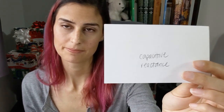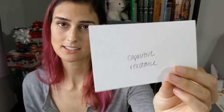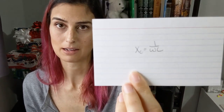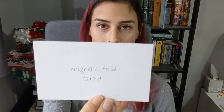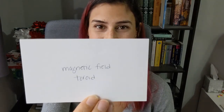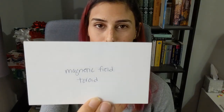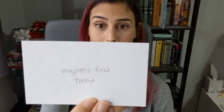Capacitive reactance: X sub C equals 1 over omega times C. The magnetic field of a toroid: B equals mu naught n times I divided by 2 pi r.